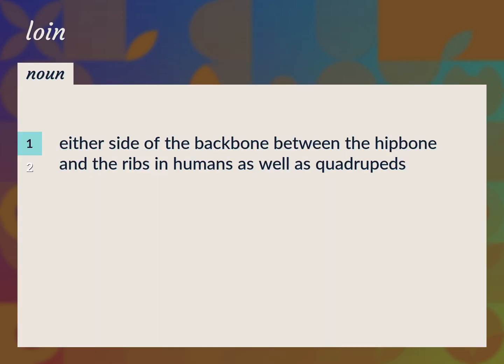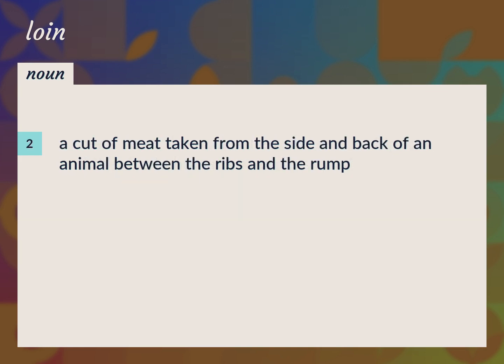Either side of the backbone between the hip bone and the ribs in humans as well as quadrupeds. Lumbus. A cut of meat taken from the side and back of an animal between the ribs and the rump.